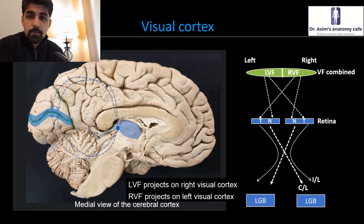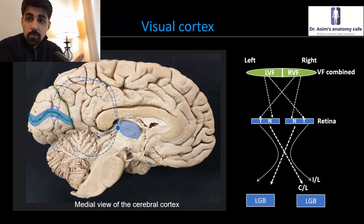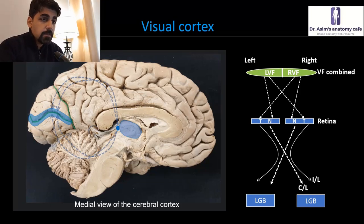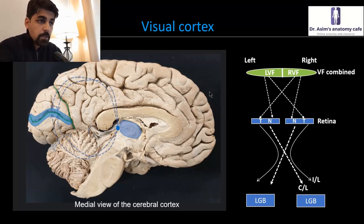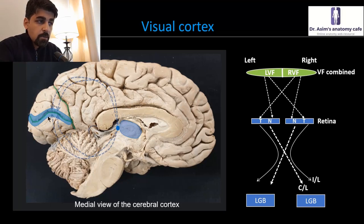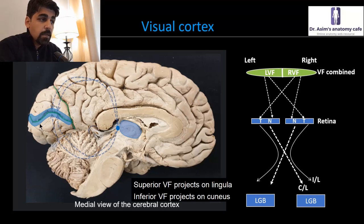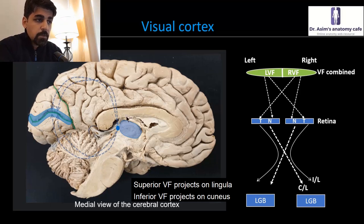This is important from a localization of lesion perspective: if there's a stroke involving the right occipital cortex, the left visual field will be compromised, and the right visual field will be compromised if there is a lesion in the left occipital cortex or primary visual area. To make things more complicated, the flipping of the visual field is not just in a horizontal axis — it's in a vertical axis as well. The upper visual field gets projected onto the lower part of the retina, meaning it's projected onto the lower part of the primary visual area, inside the lingual gyrus or lingula, while the lower visual field is projected into the upper retina and onto the cuneus.